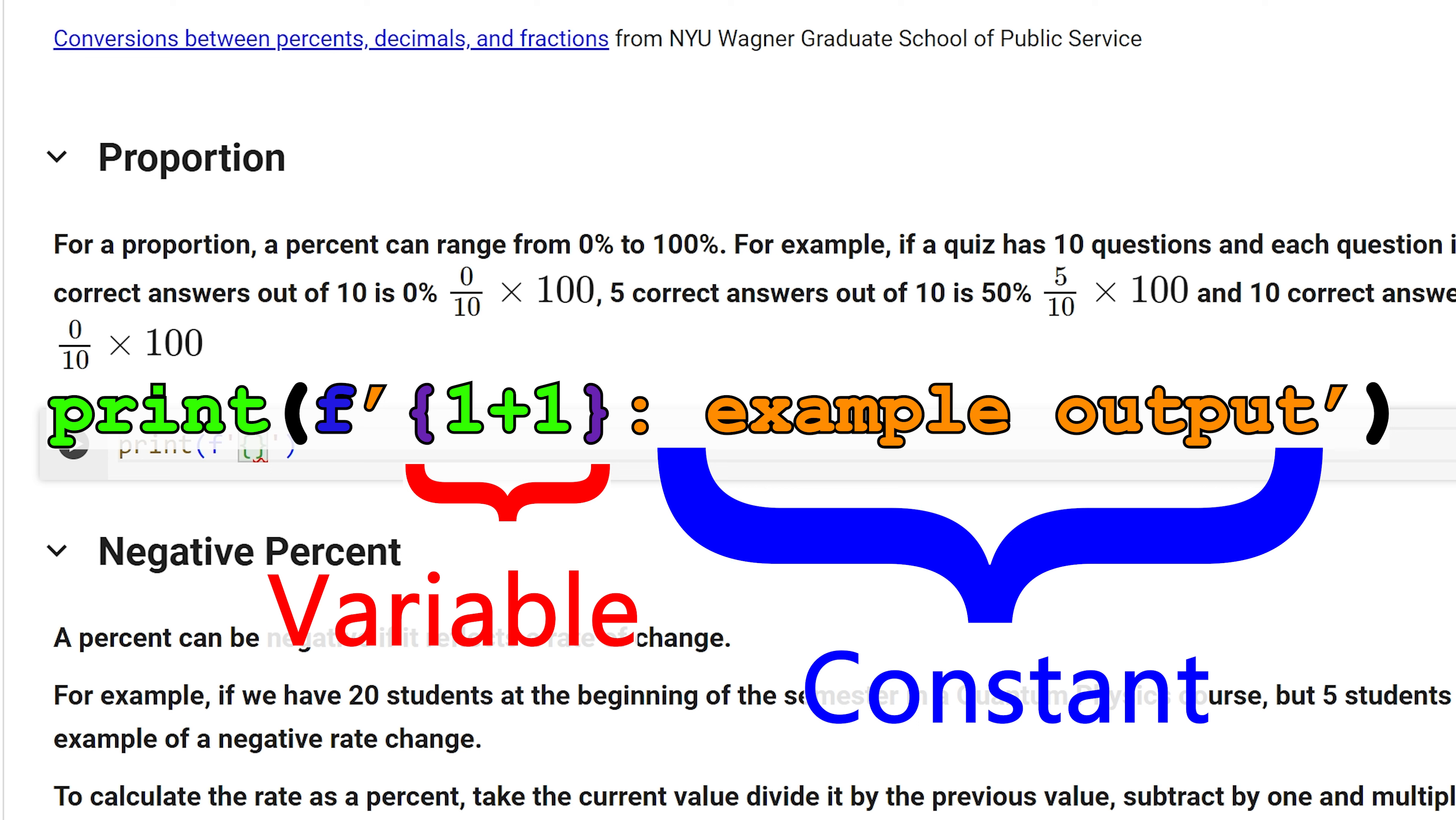The curly braces are going to be the variable part of the print, which means that it can change based on a variable input inside. Everything outside of the curly braces, but within the quotations will be constant.